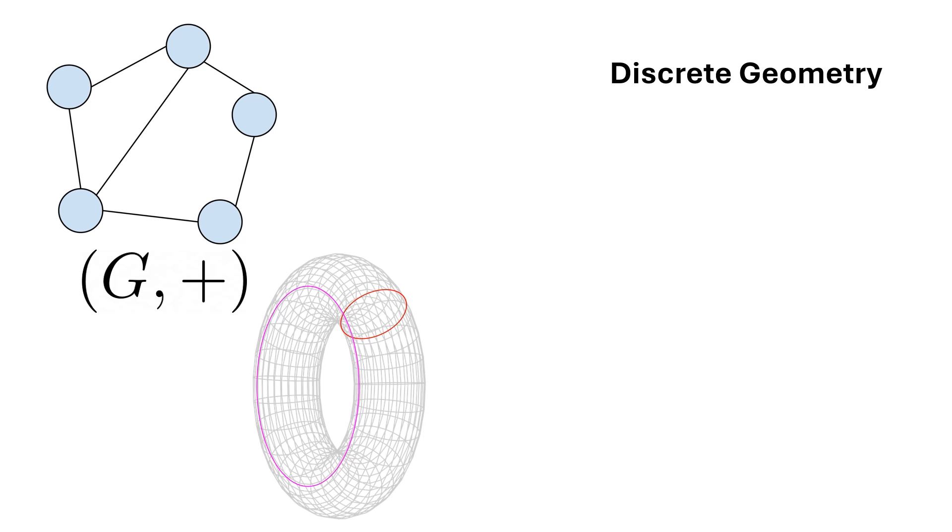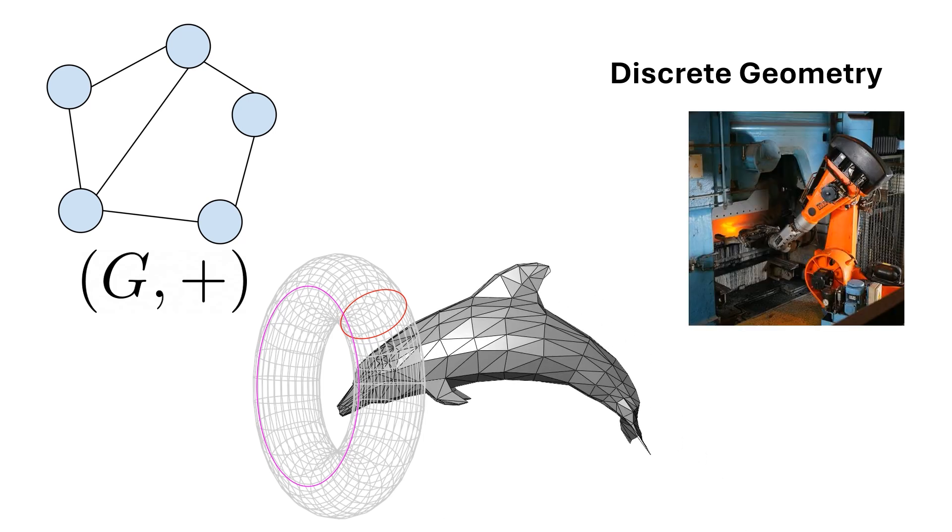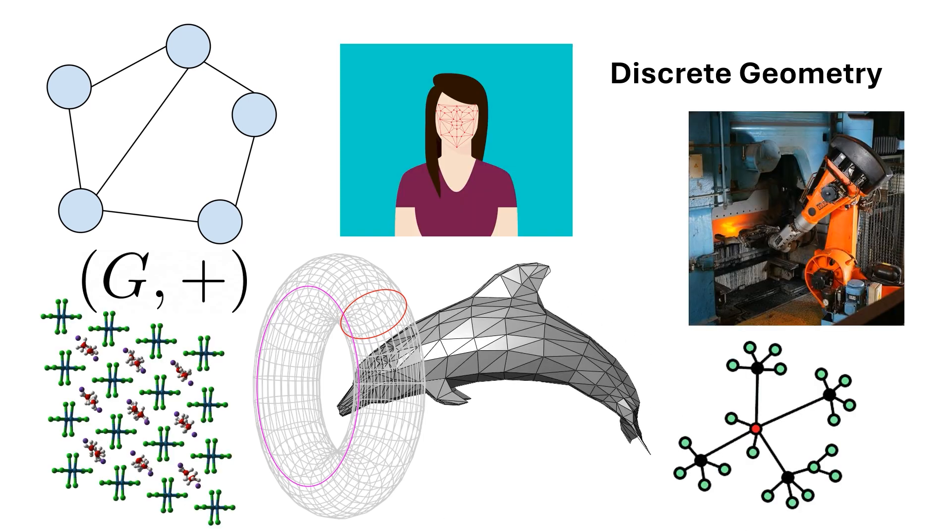Discrete geometry has applications to other parts of mathematics, such as graph theory, topology, and algebra. It also has real-world applications to computer graphics, robotics, image processing, network design, crystallography, and more.